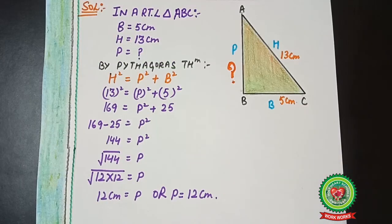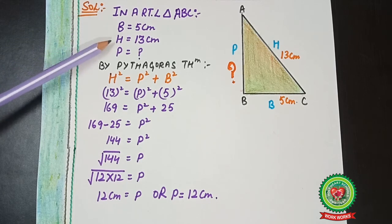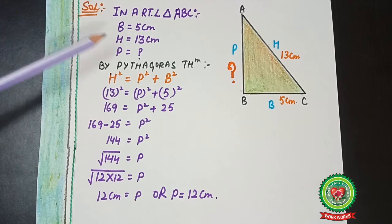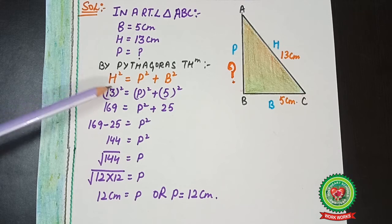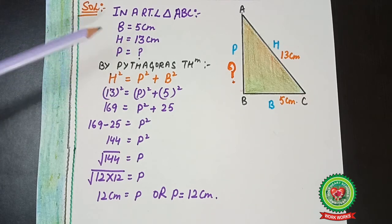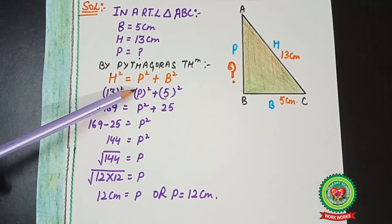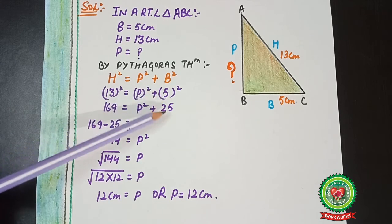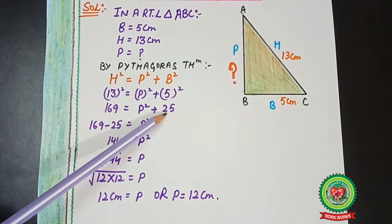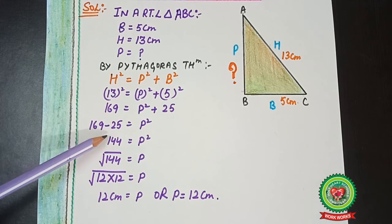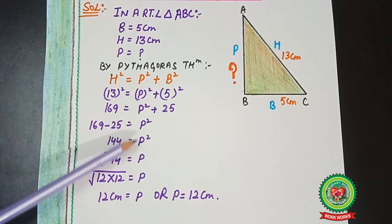In right-angle triangle ABC: B = 5 cm, H = 13 cm, P = ? By Pythagoras theorem: H² = P² + B². The value of H is already given, so H² = 13² = 169. We write P² plus B² (which is 5² = 25). To find P, we shift 25 to the other side — it changes sign to minus. So 169 − 25 = P², giving us 144 = P².